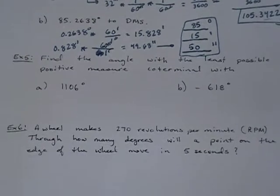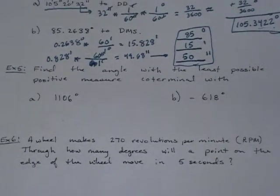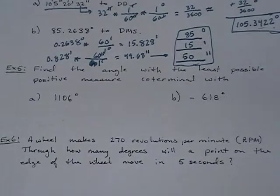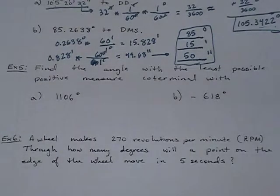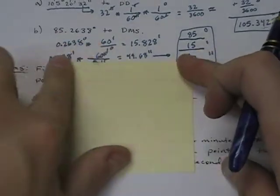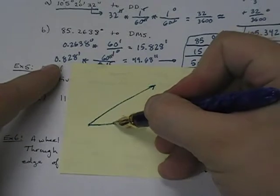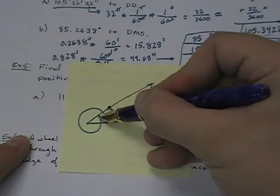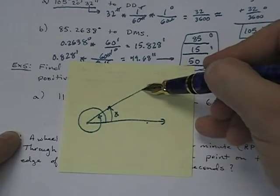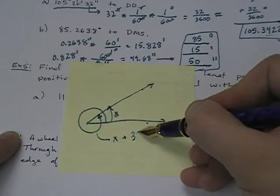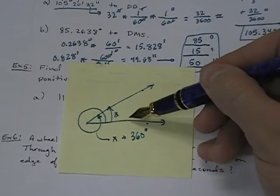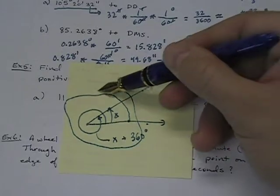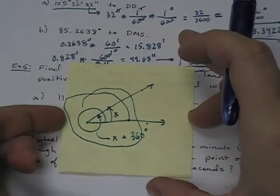Some other basic angle problems will follow. I want to talk about co-terminal angles. Co-terminal angles are two angles that have the same initial side and the same terminal side — in other words, they look the same. A simple example: if I have some angle X, and I go around a full rotation with the same initial side and same terminal side but a different measure, that would be X plus 360. I could go again — X plus 720 — and keep going over and over.